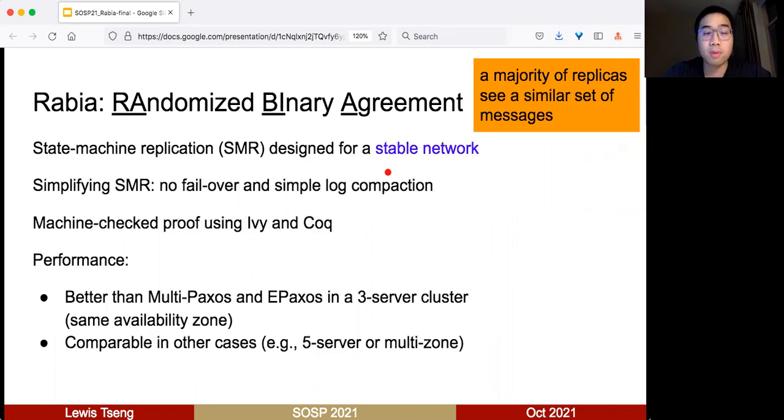What's cool about Rabia is that it simplifies the development for SMR. Particularly, it does not need any failover protocol and supports very simple log completion. All the proofs for our protocol are machine-checked using Ivy and Coq. The performance is very good—better than MultiPaxos and EPaxos when there are three servers deployed in the same availability zone, and comparable in other cases like five servers or multi-zone deployments.